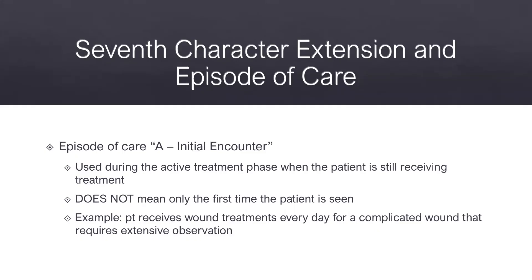A seventh character extension is always placed in the last position — the seventh character of an ICD-10-CM code — and includes more information about the condition or the episode of care for that condition. Although the seventh character most commonly identifies the episode of care, it is also used in obstetrics coding and a few other places in the ICD-10-CM codebook. The seventh character may not always be a letter. In obstetric coding, the seventh character may be a number used to identify the fetus in a multiple gestation pregnancy.